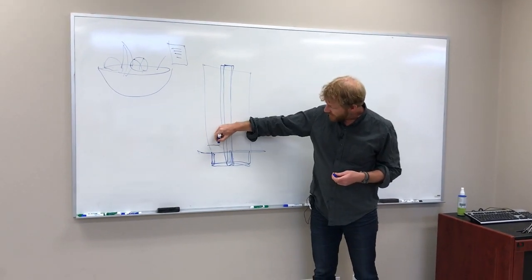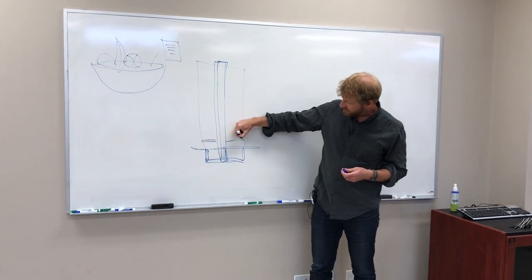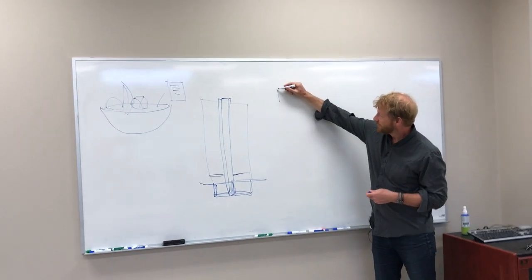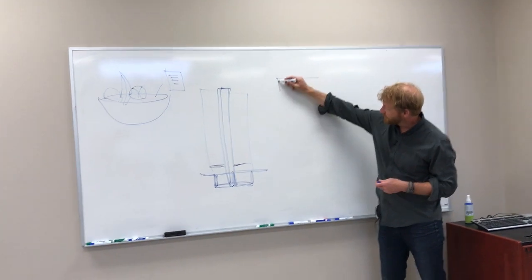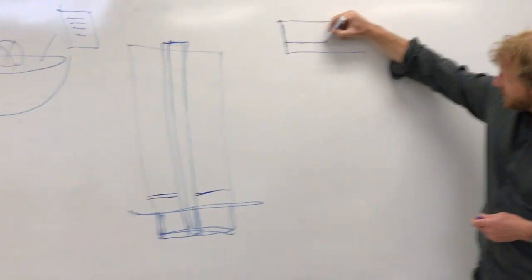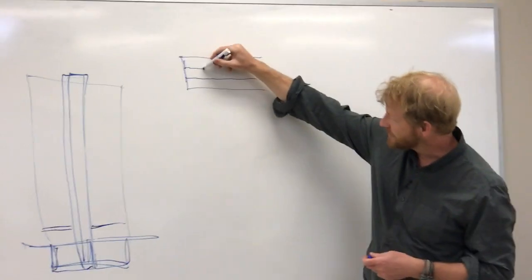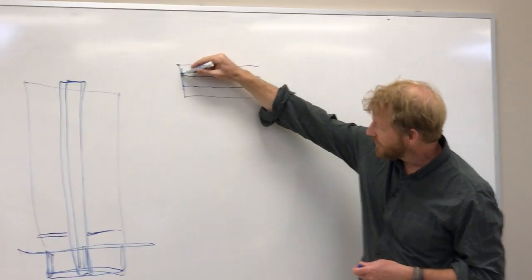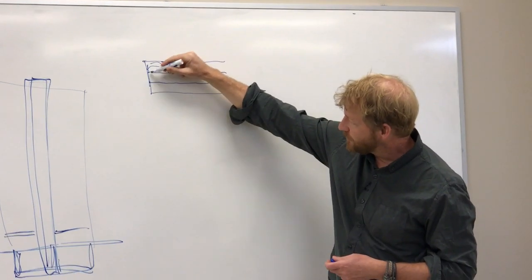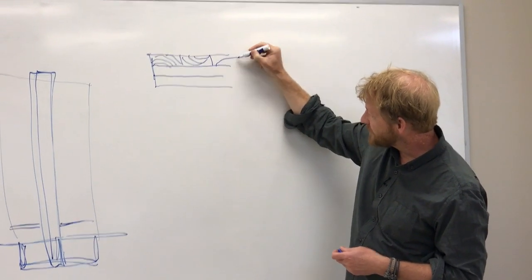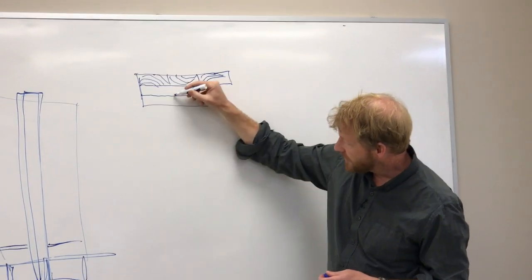Then what we do is we have floor slabs that are made out of these thick panel products. Now the panel products look like this, this is in real dimension. This is what a CLT looks like. Each layer is about the thickness, a little less than a two by four, and the boards in one direction are glued together side by side.